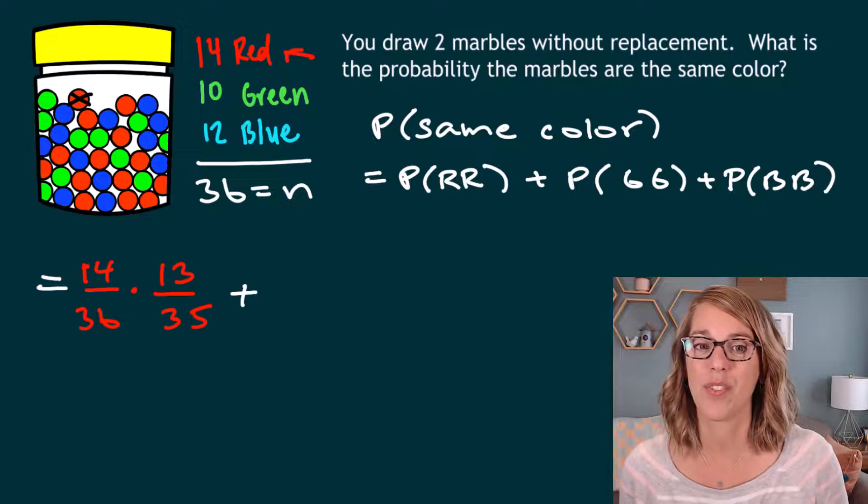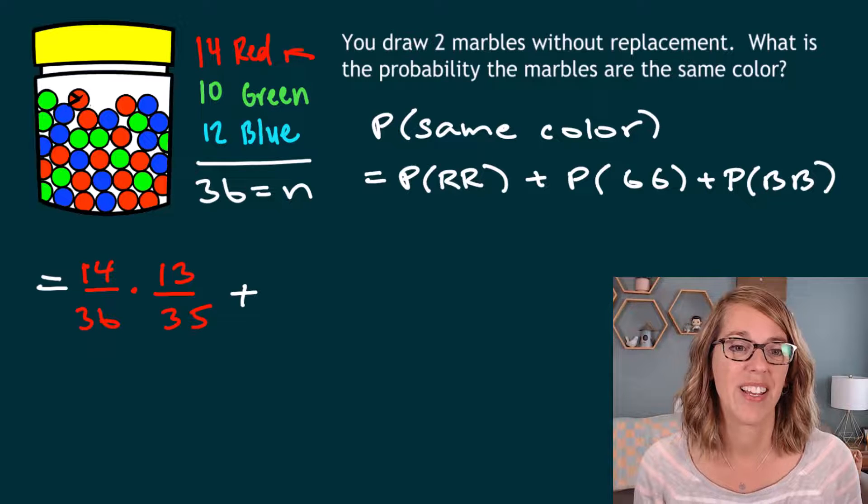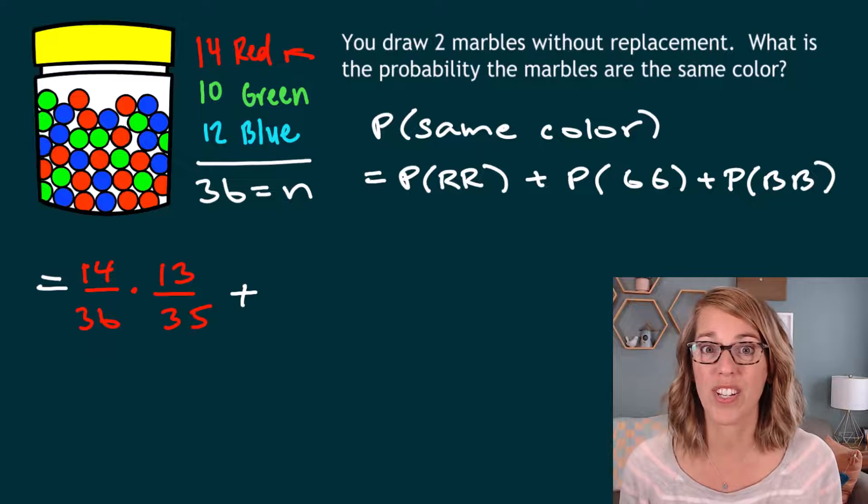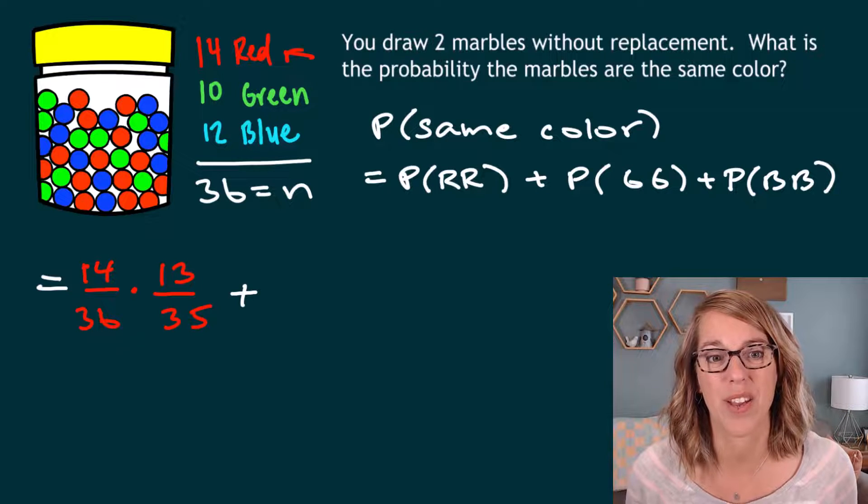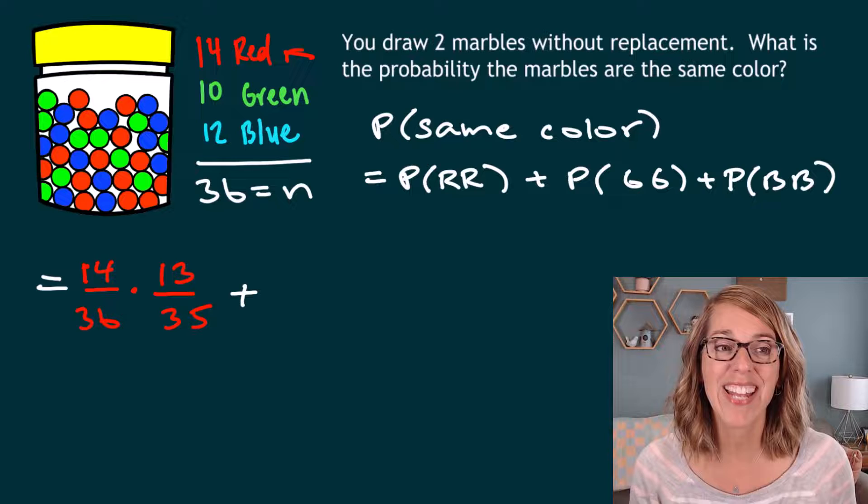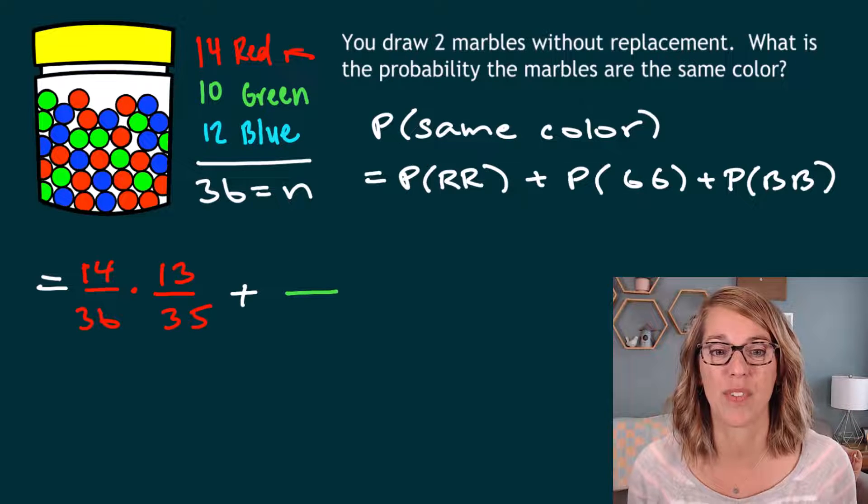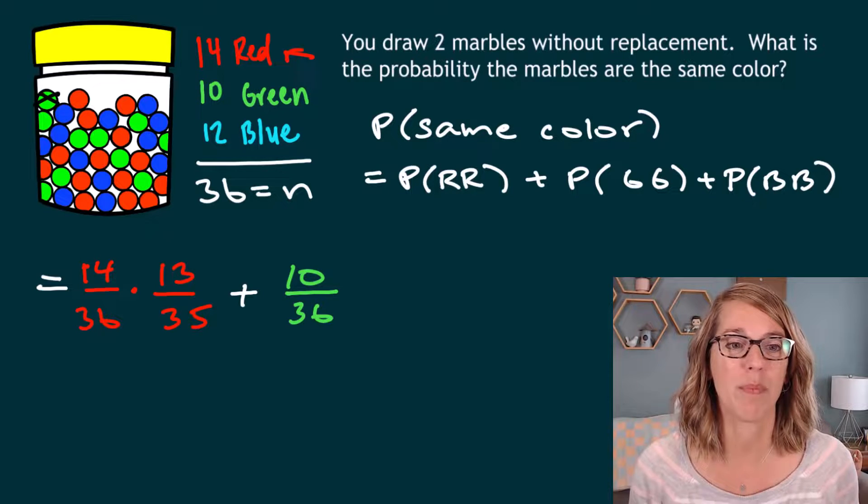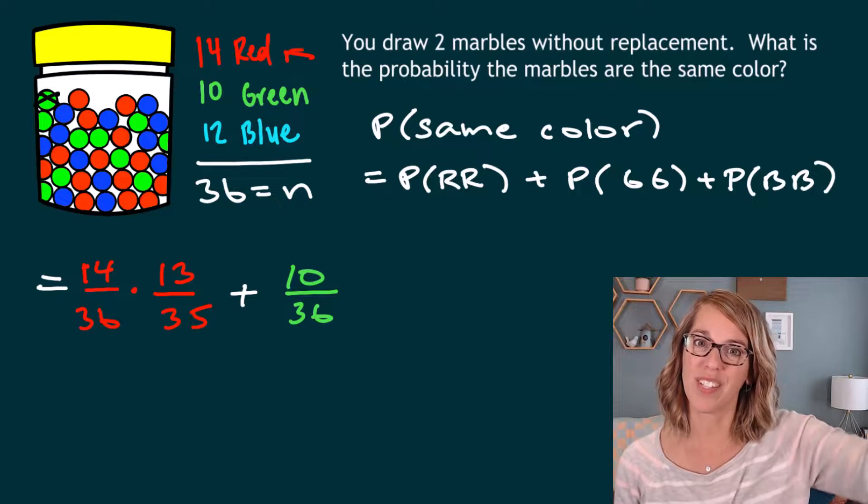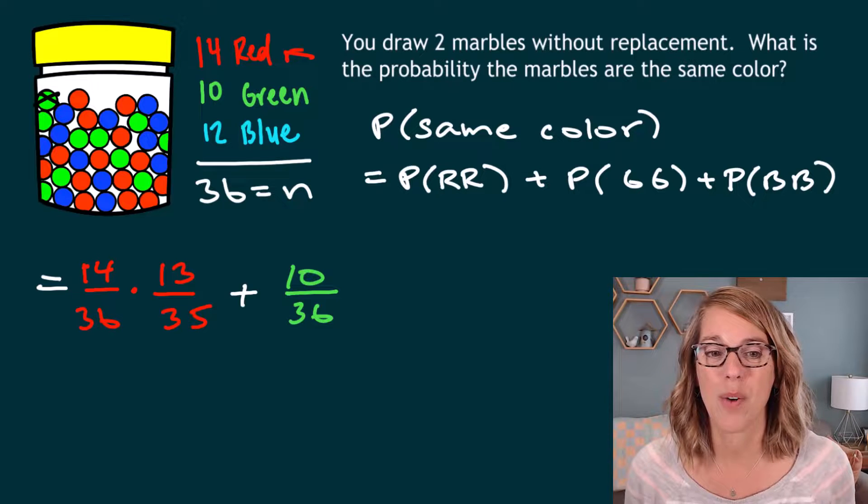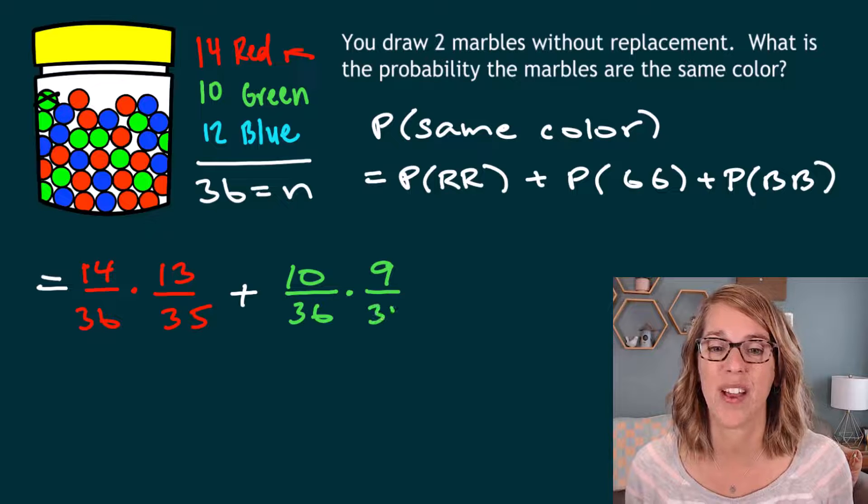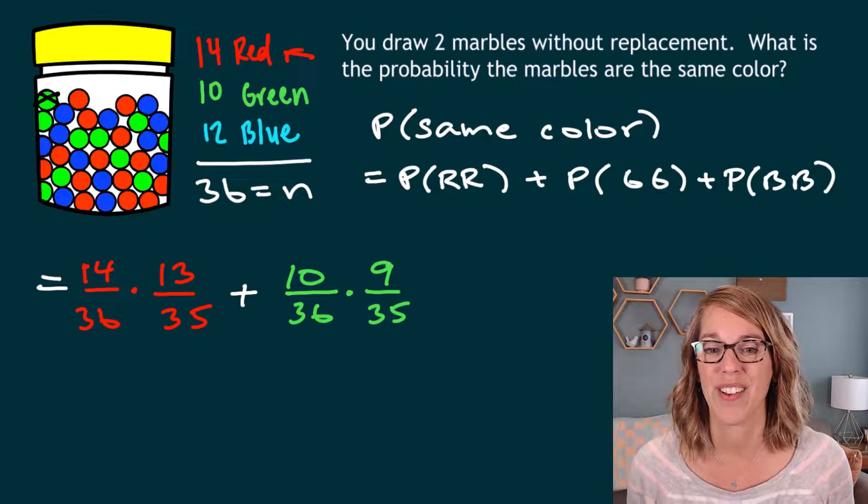Or next we're going to do green and green. I want to go back to the full jar. So I've got all 36 in there, and I want to start by drawing a green marble. Well, there are 10 green marbles to choose from. So there's 10 out of the 36 marbles total, but again, this is without replacement. So I'm taking one of those and setting it aside. So when I go back to draw that second green marble, there are nine left out of the 35.